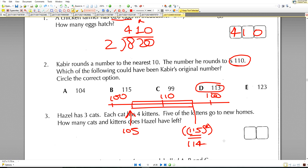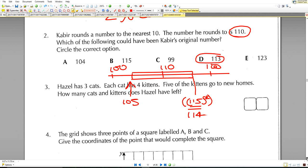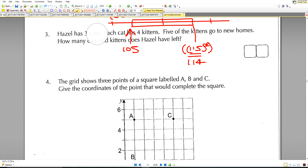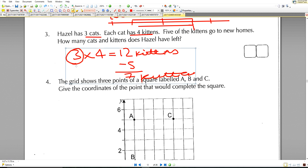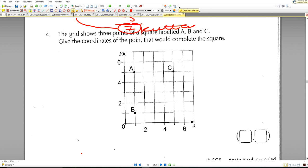Question number three. Hazel has three cats. Each cat has four kittens, so you have three cats with four kittens each, so we have 12 kittens altogether. Now five of the kittens go to new homes. How many cats and kittens does Hazel have left? You have seven kittens left, and don't forget there are three cats as well. Three cats plus seven kittens gives you ten.